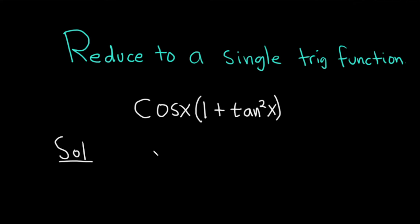I'm going to write this down again. Cosine x, then parentheses, and then 1 plus tan squared, that's going to be secant squared x.